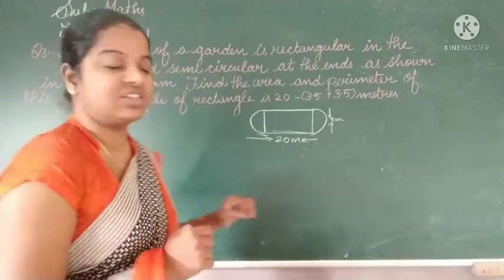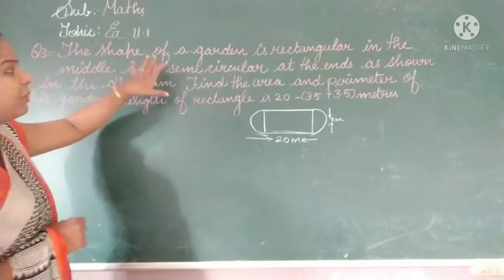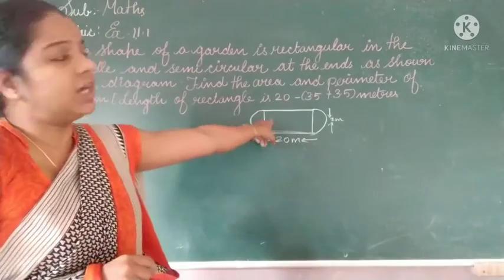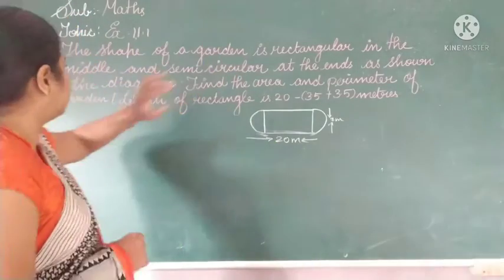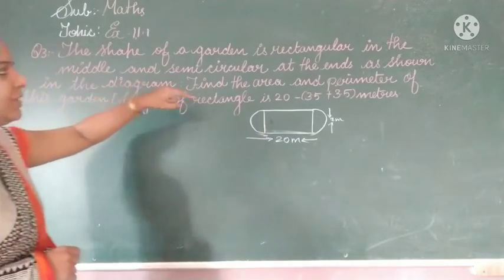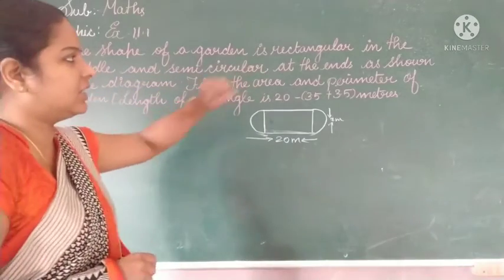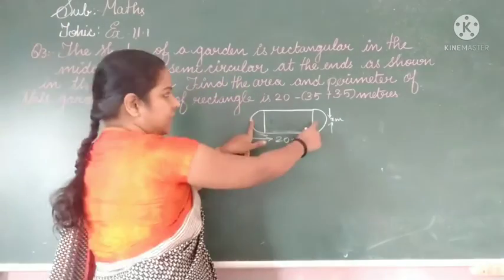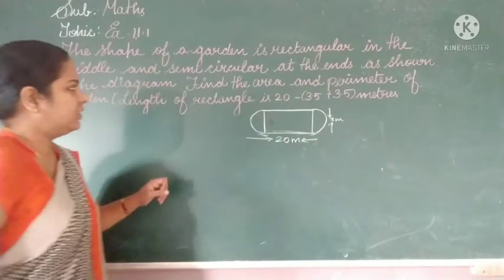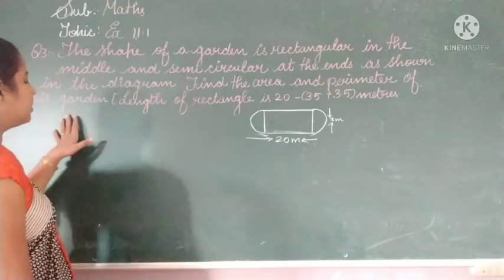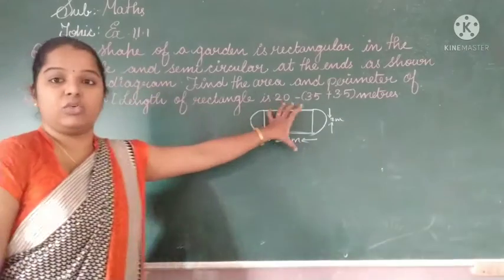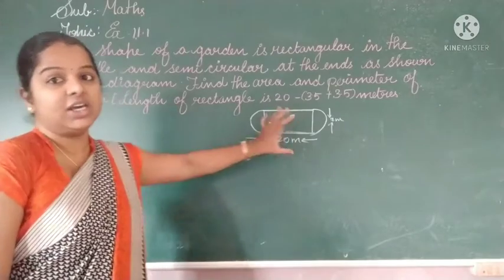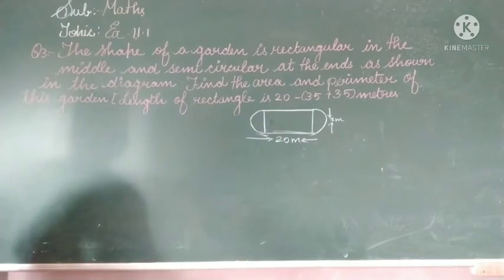Now let's start with question number 3. The shape of a garden is rectangular in the middle and semicircular at the ends, as shown in the figure. You have to find the area and perimeter of the whole garden. Understood?